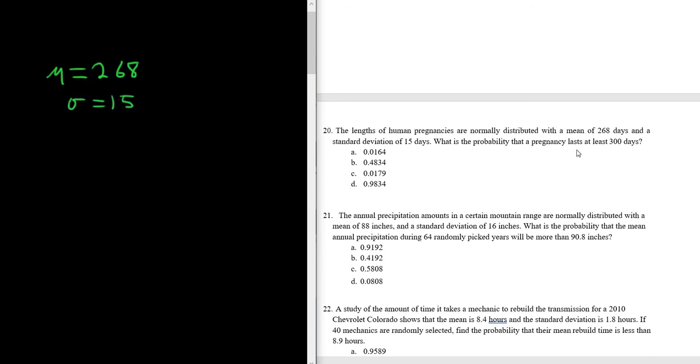And we want the probability that it will last at least 300 days. So probability—x is the length of the pregnancy, and at least is greater than or equal to 300. So we need to figure out this probability.